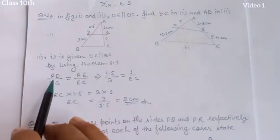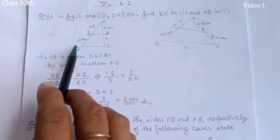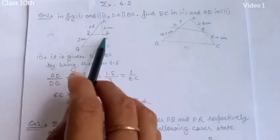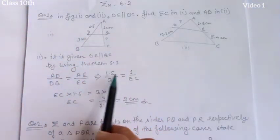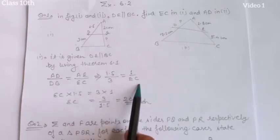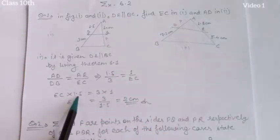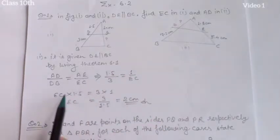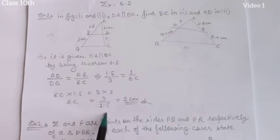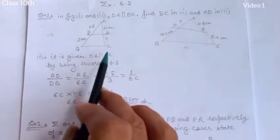Just replace the values: AD is 1.5 cm, DB is 3 cm, AE is 1 cm, and EC we have to find. So 1.5 upon 3 equals 1 upon EC. By cross multiplication: EC × 1.5 = 3 × 1. Therefore EC equals 3 upon 1.5, which gives us 2 cm. So we obtain the value of EC as 2 cm.